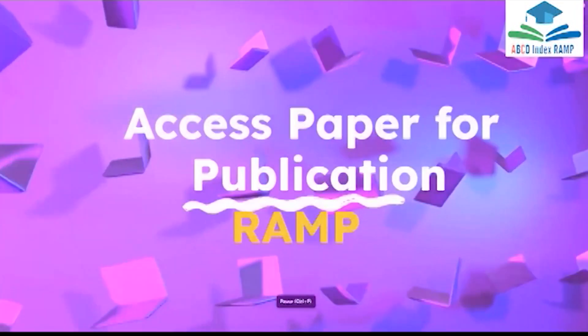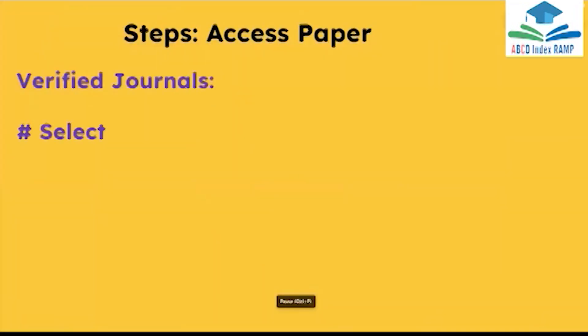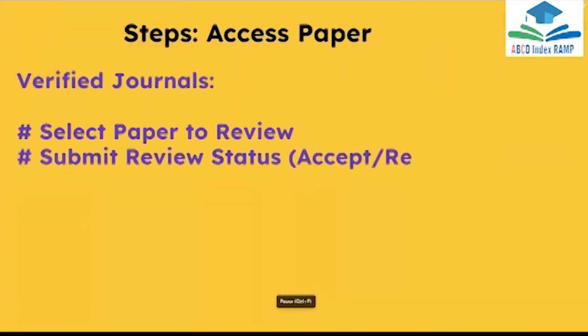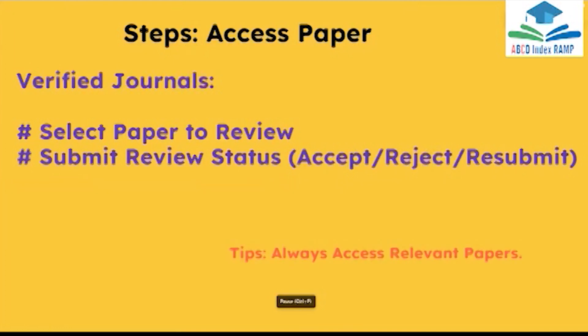Journals can access and publish papers in two easy steps. First, select a paper to review. Second, submit review status by accept, reject, or resubmit.